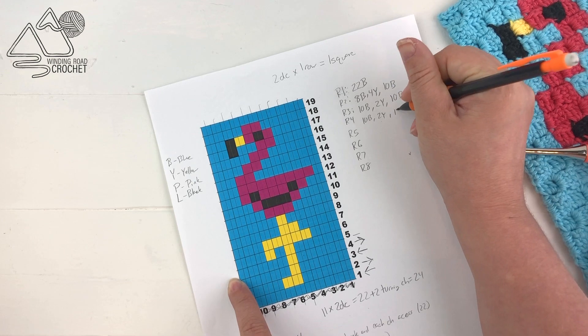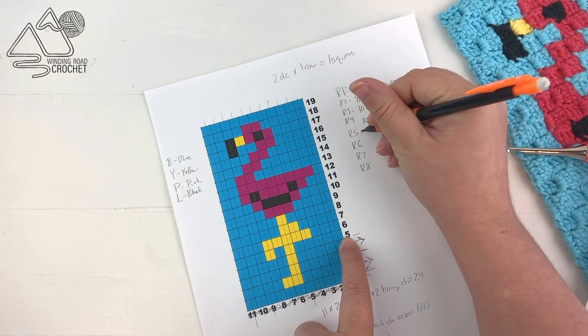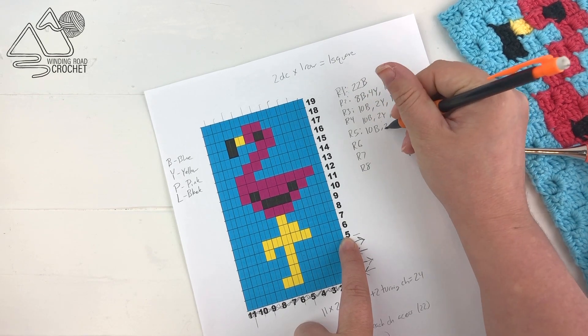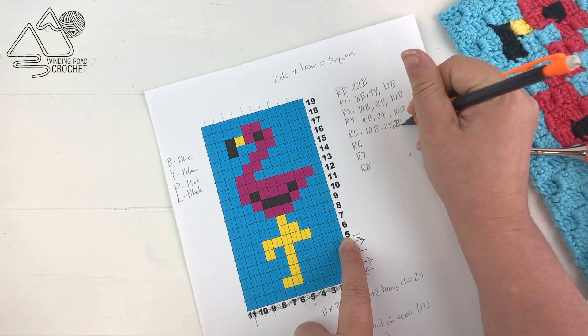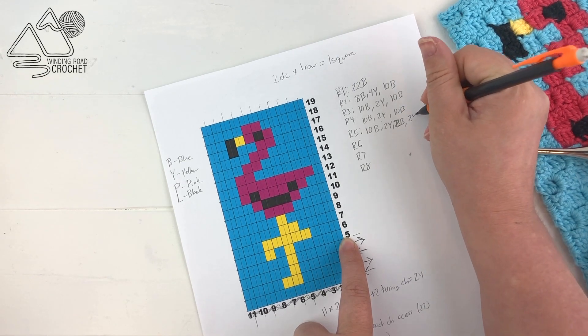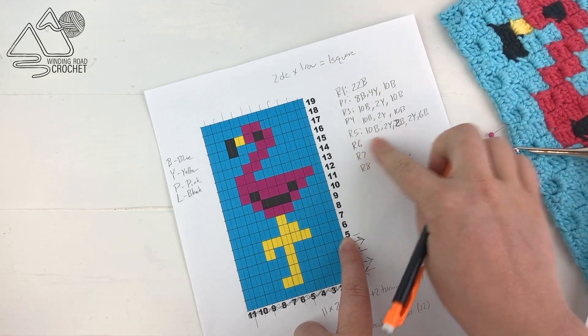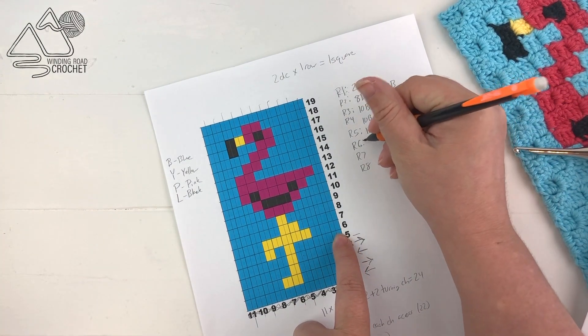So for example, when I reach row five, I see that there is yellow in two different places. But if I was to carry my yellow from the first section underneath the blue, which is going to be in between two blue squares, to the second section, well, it's not going to look right. You're probably going to see the yellow peeking through. So yes, I am going to have to clip my thread and pick it up later and just have two more tails to weave in.